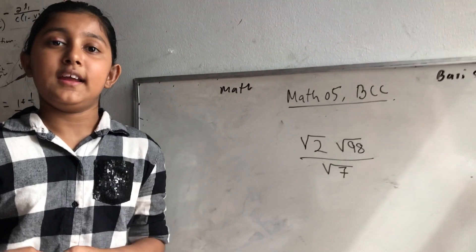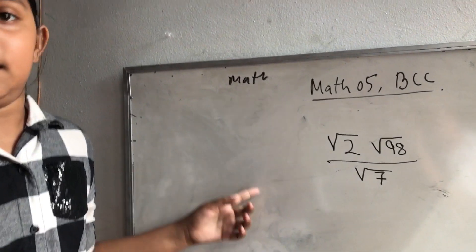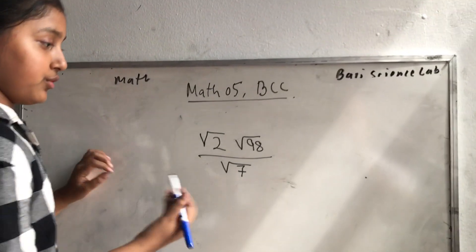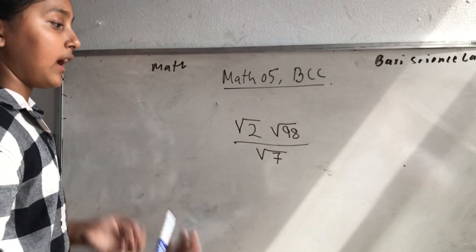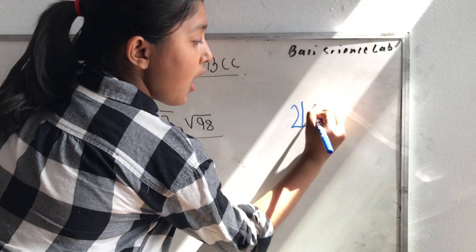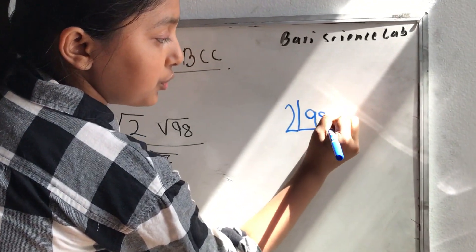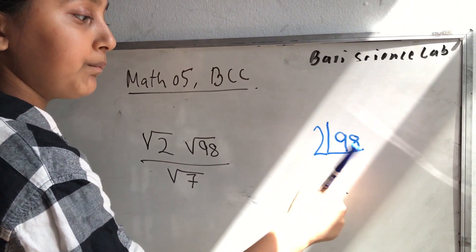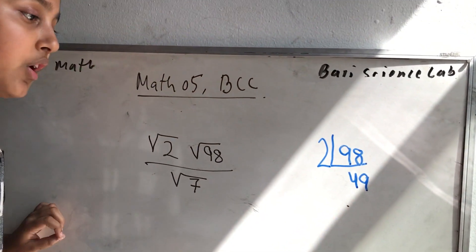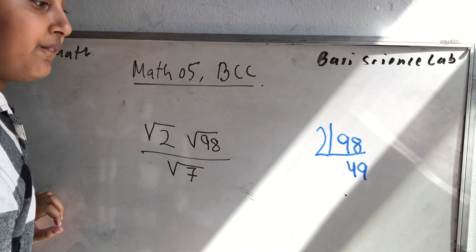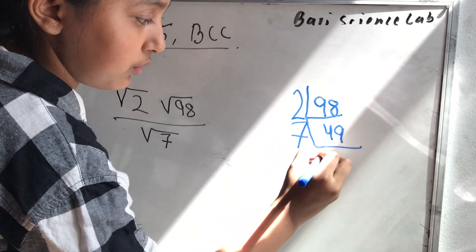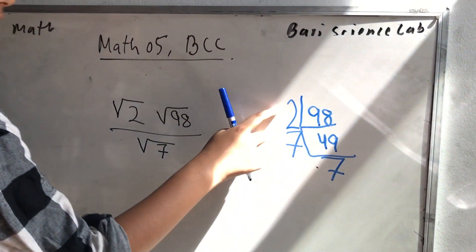Hi, my name is Adrian Zabari and this is number 3 of math. First I have to find the factors of 98. I start with the lowest term which is 2. First I do 98 divided by 2 which is 49. I know that 49 is a factor of 7, so I divide it by 7, which gives me root 7, root 7, root 2.